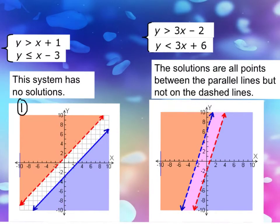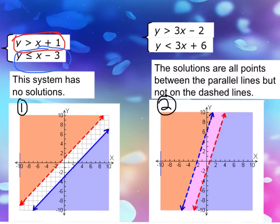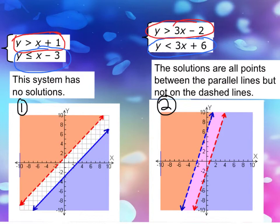I'll assume that you paused and tried this on your own. Here are the solutions for one and two. On number one, the system's first inequality represents the red line and the second represents the blue line. The sentence describing the solution is: the system has no solution — there's no overlapping, and no point where the red overlaps with the blue. Looking at number two, the blue line is the second inequality and the red line is the first. The solutions are all points between the parallel lines, but not on the dashed lines — the solution region is right here in the middle.